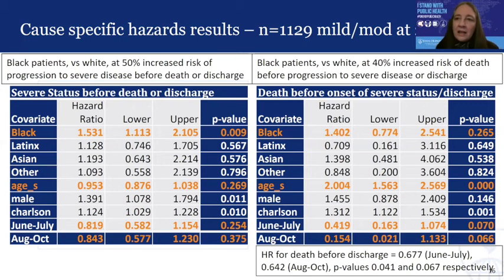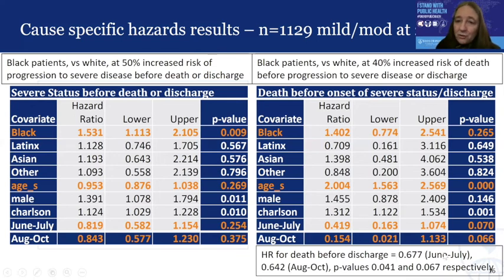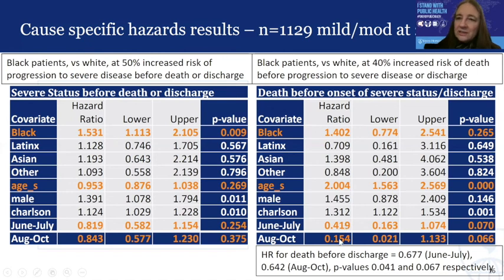Finally, reconsidering the death analysis without treating severe disease as a competing risk: individuals can experience severe disease and then die, so it wasn't strictly necessary to define severe disease as competing for the death outcome — it was done here to compare all competing risks together. If only interested in death before discharge, there was a reduction in June to July and August to October compared to earlier in the year, but not nearly the magnitude seen when using the competing risk framework. This indicates that the lion's share of what was going on was for the oldest old individuals — a substantial improvement in rescuing them from death. Thank you very much.